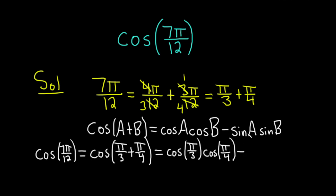And then minus sine of π over 3 because our a is π over 3 times the sine of π over 4.